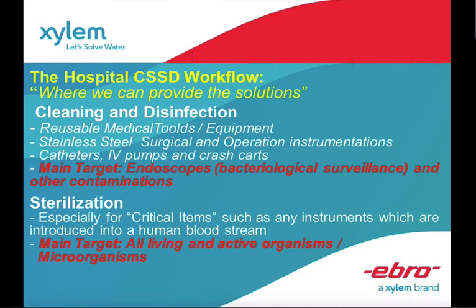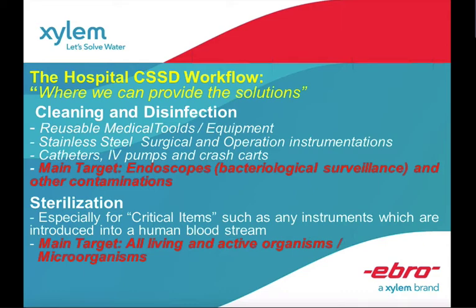When talking about cleaning and disinfection and sterilization, we categorize three different kinds of materials in hospitals: non-critical, semi-critical, and critical. These three categories are processed according to how they are supposed to be disinfected and sterilized. Sterilization refers to critical items, such as any instruments introduced into the human bloodstream or the human body, and the main target is all living and active organisms and microorganisms.